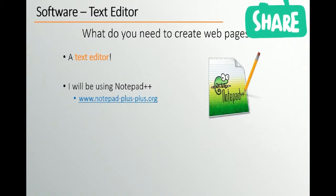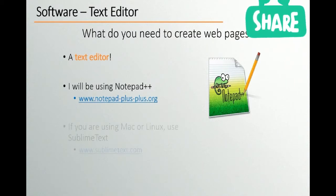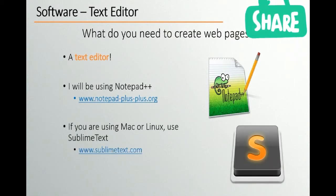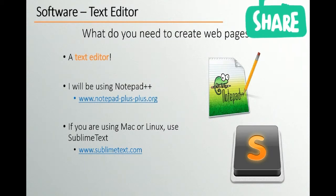On the other hand, if you've already had some experience with programming, then I would recommend another program. Additionally, because Notepad++ is only available on Windows, if you're on either Mac OS X or if you're using a version of Linux, I would suggest Sublime Text instead. Sublime Text is actually my favorite text editor. However, because it doesn't have some specific functionality inbuilt that is in Notepad++, I'm going to stick with Notepad++ in this course.